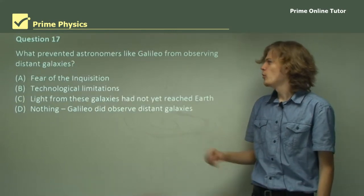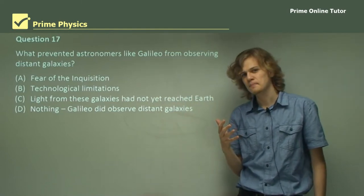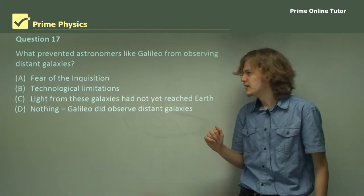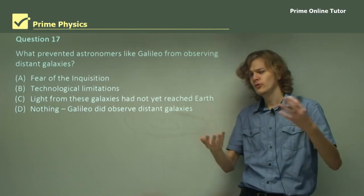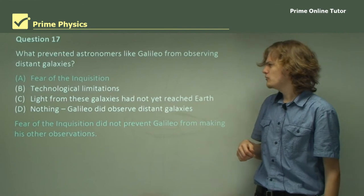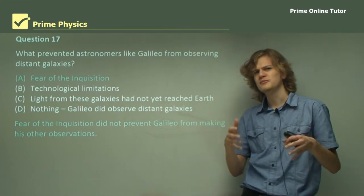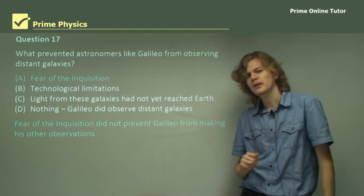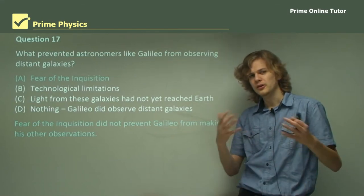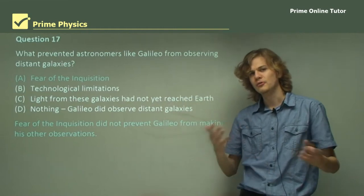Question 17. What prevented astronomers like Galileo from observing distant galaxies? We have a few options here and all of them seem reasonably plausible. Fear of the Inquisition. As we know, the Inquisition preferred a geocentric model. And so heliocentric models, like the one that Galileo advocated, were in a bit of trouble. But even if the observation of distant galaxies would have been punished by the Inquisition, we know that this wouldn't have stopped Galileo because he published his heliocentric model of the universe.